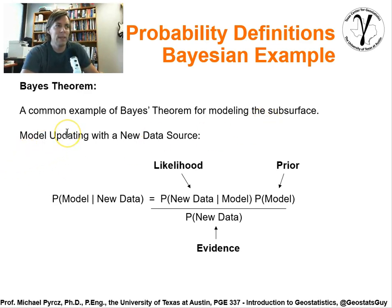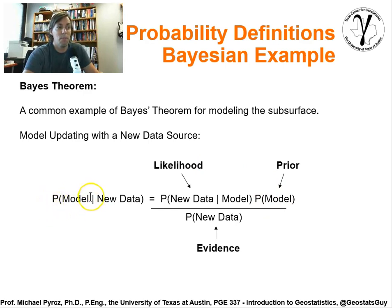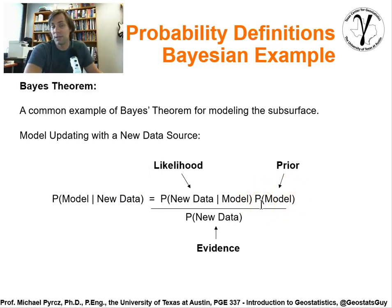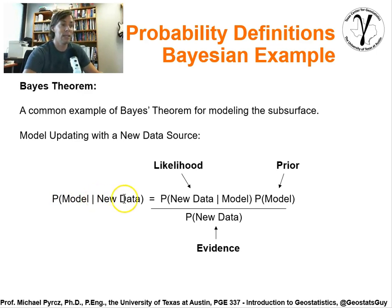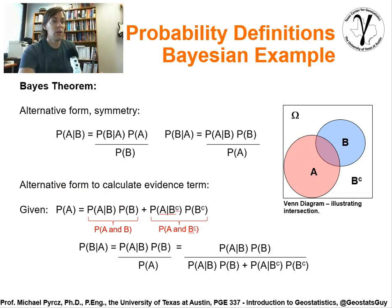Bayes' theorem is commonly used within subsurface modeling, and it comes down to a fundamental idea of Bayesian updating or model updating. We can re-term it using different variables instead of A's and B's. We can ask: what's the probability of a model — or a representation of the subsurface — given some new data? You start with the probability of the model as a prior before receiving new data. The evidence term would be the probability of the new data, and the likelihood term would be the probability of the new data given the model. By taking these terms, we can get an updated assessment of the model given the new data.